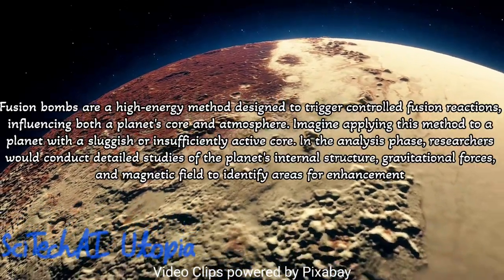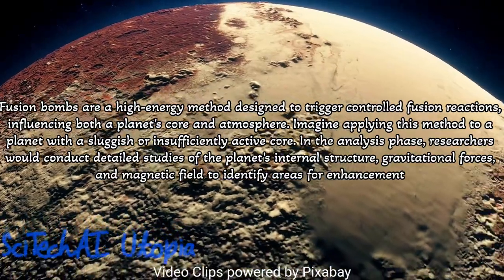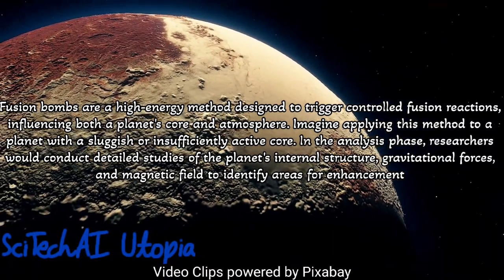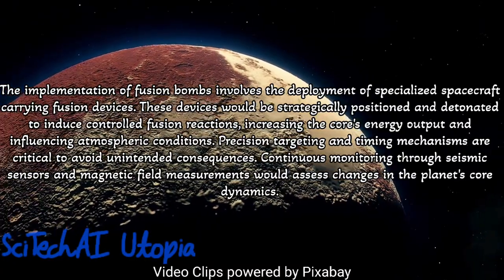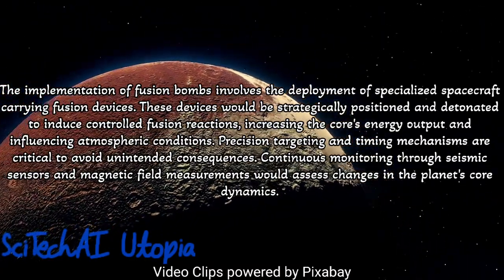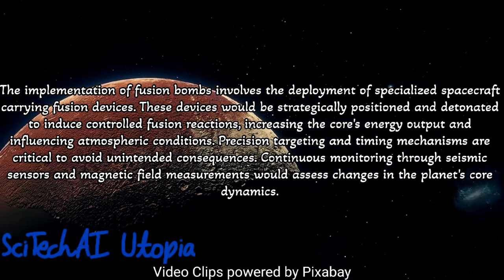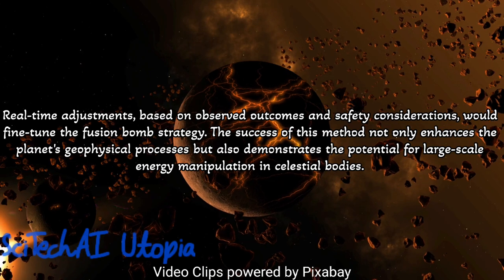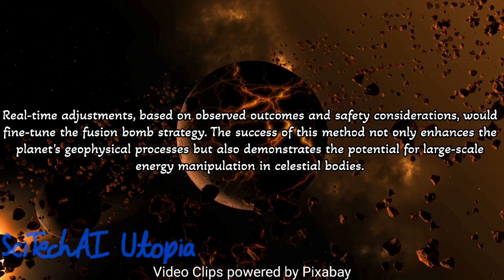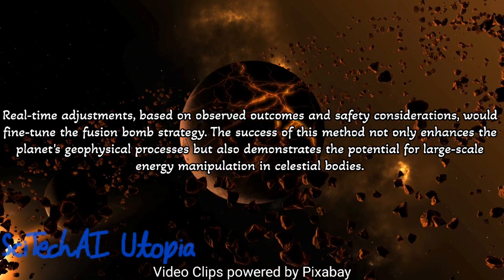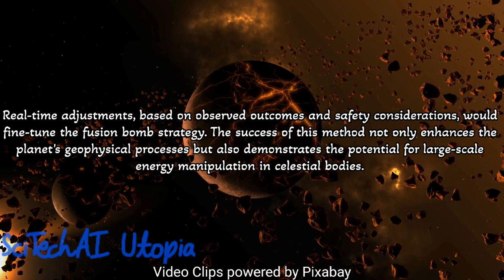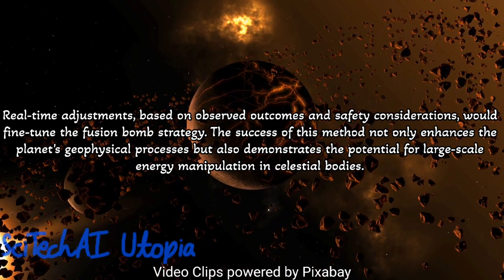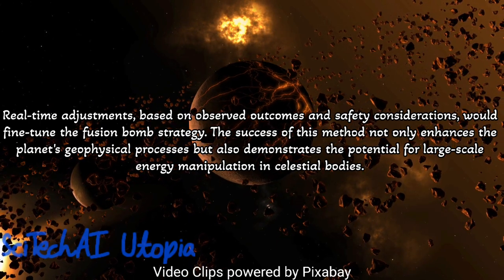Method 14: Fusion Bombs. Explore the possibility of controlled nuclear fusion reactors to alter the planet's composition and atmospheric conditions. Develop a sophisticated fusion bomb delivery system capable of precise deployment and controlled detonation. Conduct extensive simulations and modeling to predict the effects of fusion explosions on the planet's core, atmosphere, and surface, ensuring the desired terraforming outcomes. Establish safety measures, fail-safes, and ethical considerations to mitigate potential risks and environmental impacts. Implement real-time monitoring systems to assess the results of fusion bomb interventions, allowing for adjustments and refinements to the terraforming strategy.